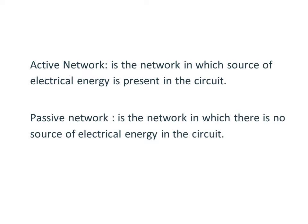There are two types of network classified on the basis of the presence of a source in the circuit: active network and passive network. An active network is one in which a source of electrical energy is present in the circuit, and a passive network is one in which there is no source of electrical energy in the circuit.